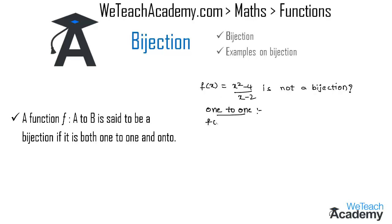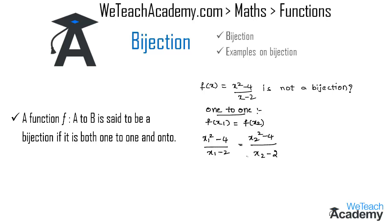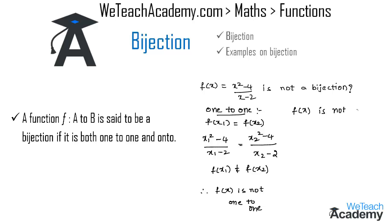First let us check whether f(x) is a one-to-one function. It must satisfy the condition f(x1) = f(x2). Replacing x with x1 gives f(x1) = (x1² − 4) / (x1 − 2), and replacing x with x2 gives f(x2) = (x2² − 4) / (x2 − 2). We observe that f(x1) is not equal to f(x2), so f(x) is not a one-to-one function and hence f(x) is not a bijection.